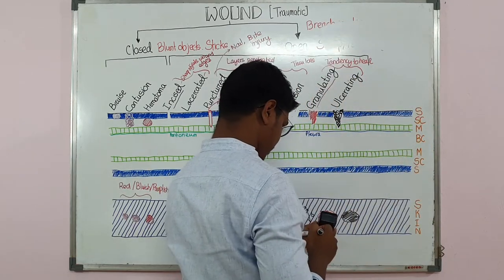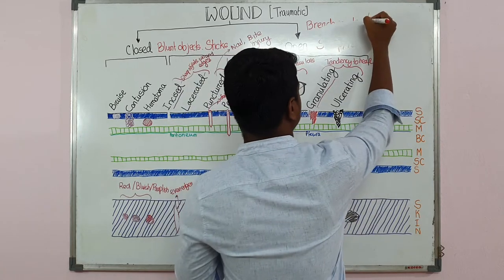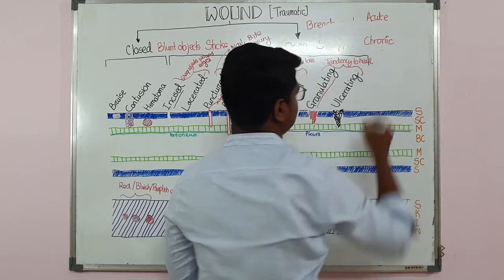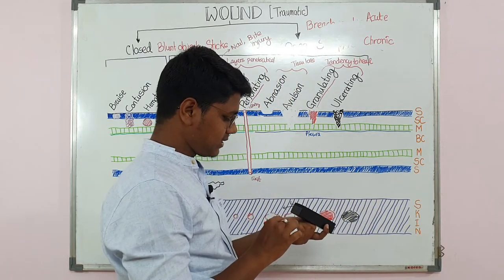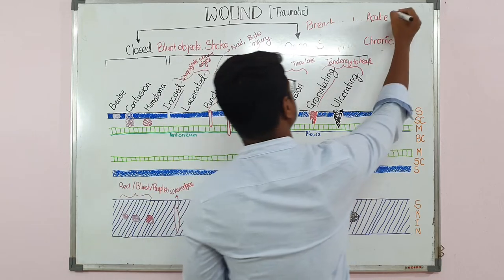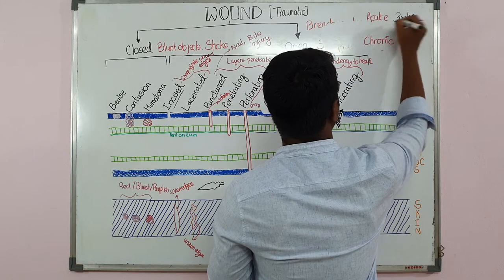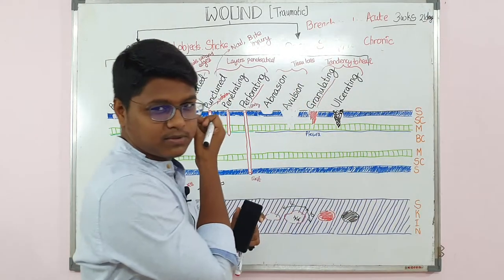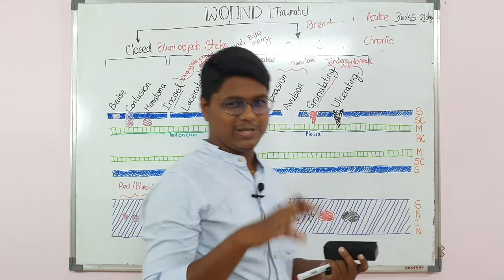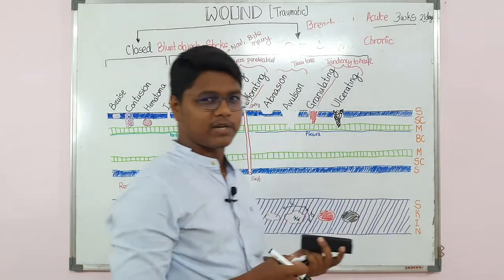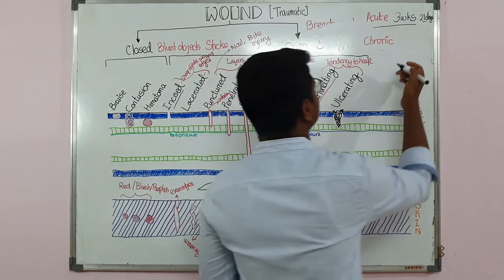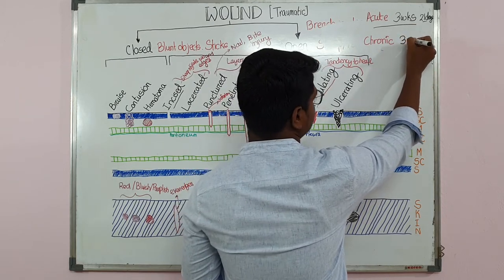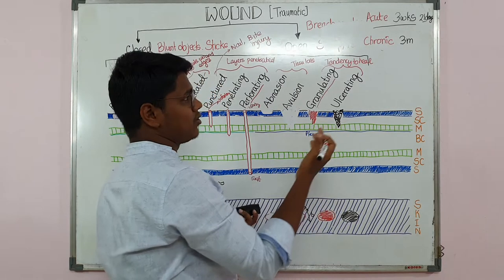Now let us discuss acute and chronic wounds. An acute wound basically heals within three weeks or 21 days. If a wound takes more time — like three months — then it becomes a chronic wound.